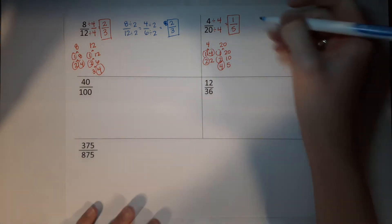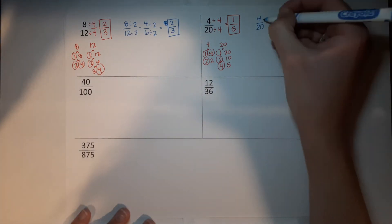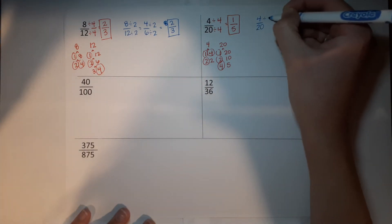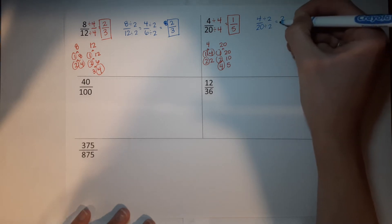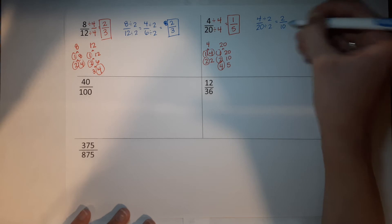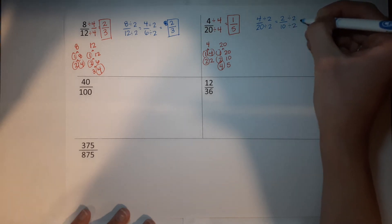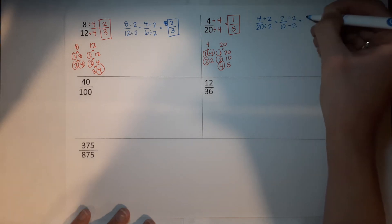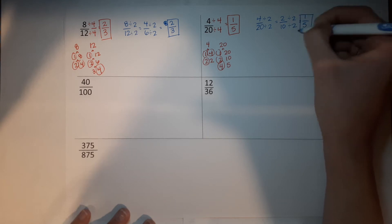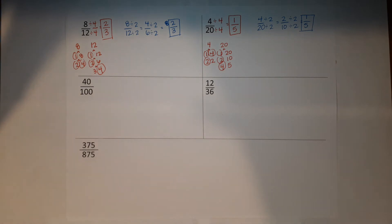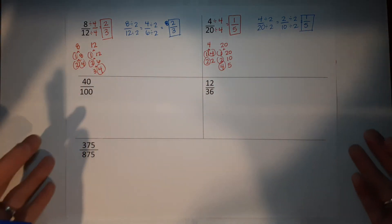But you also might have noticed they're both even, so divide them both by two — cut them both in half. Four divided by two gives me two. Twenty divided by two gives me ten. Oh look, they're both still even. So I'm going to cut them both in half again. I end up with one fifth. Beautiful. If I had tiles for those, they would line up beautifully.